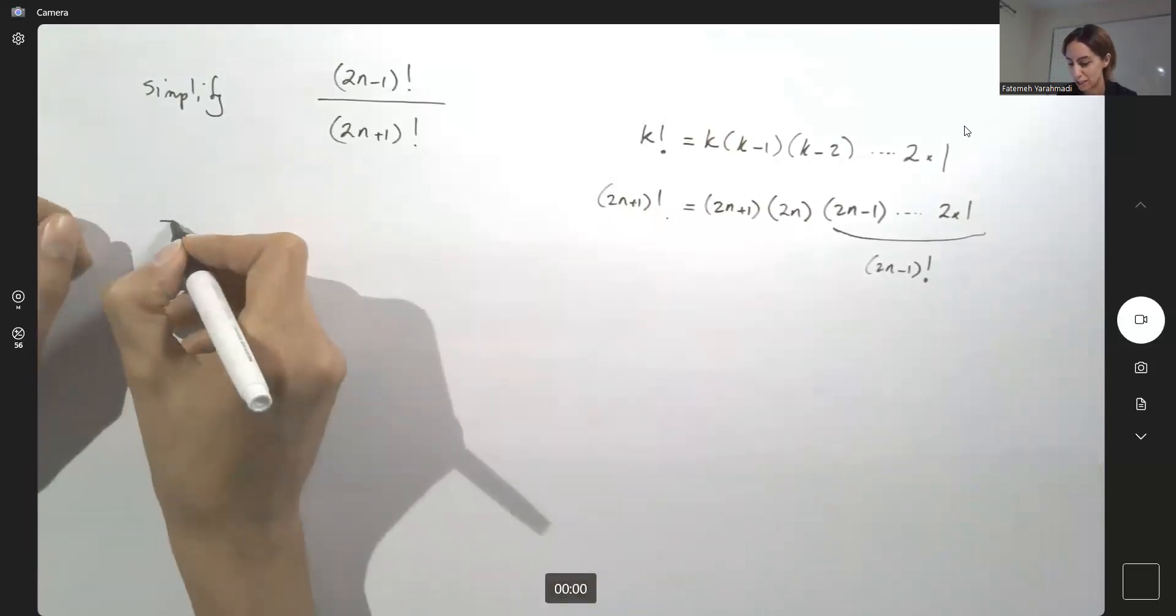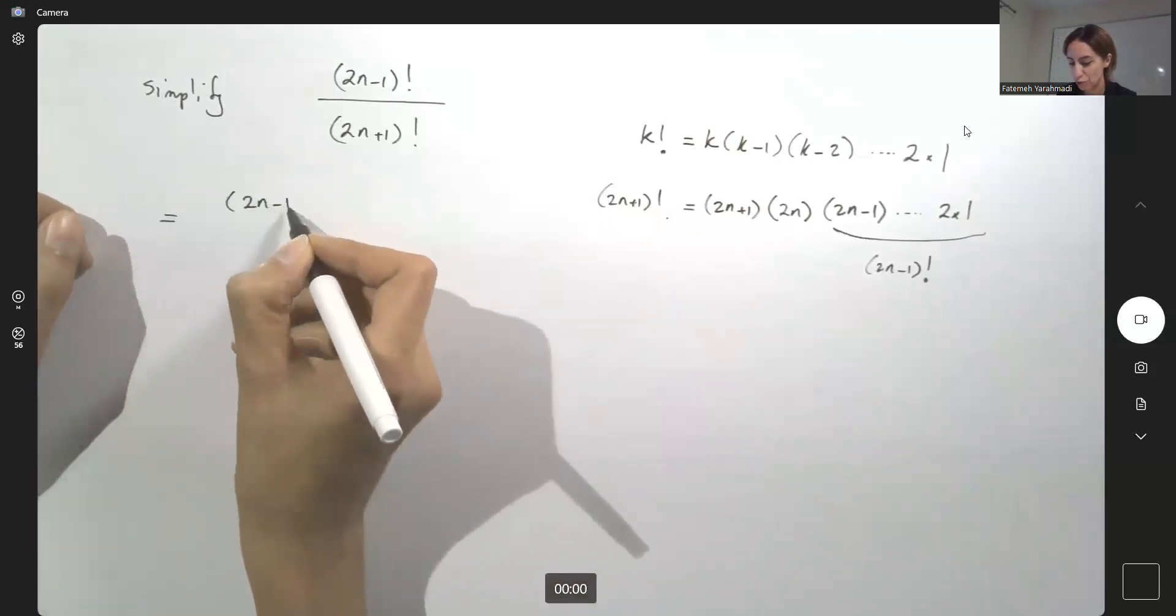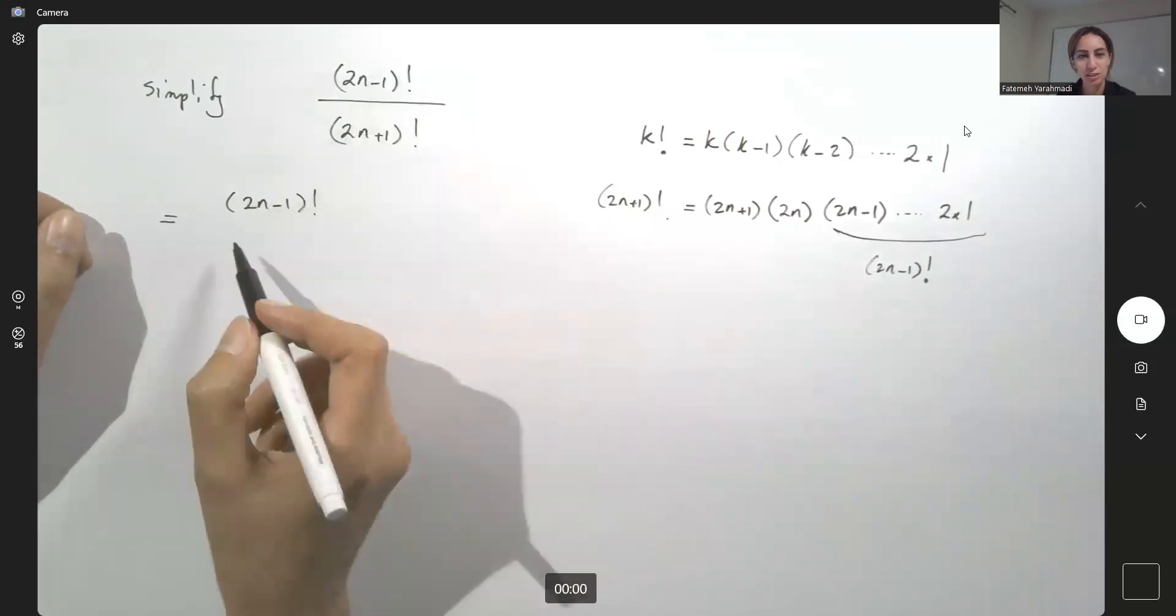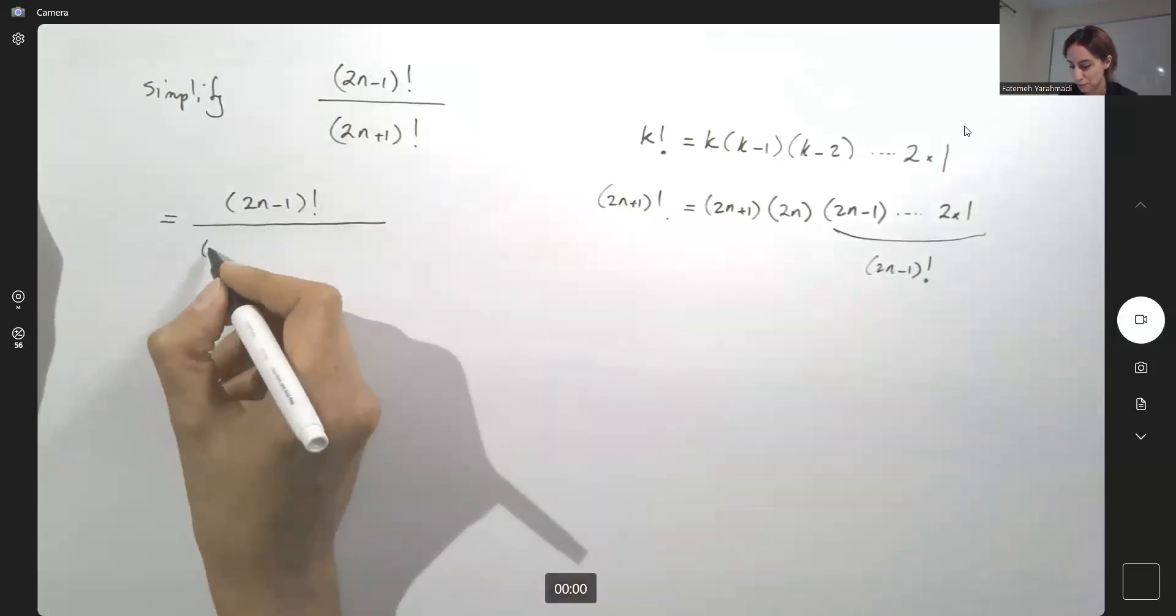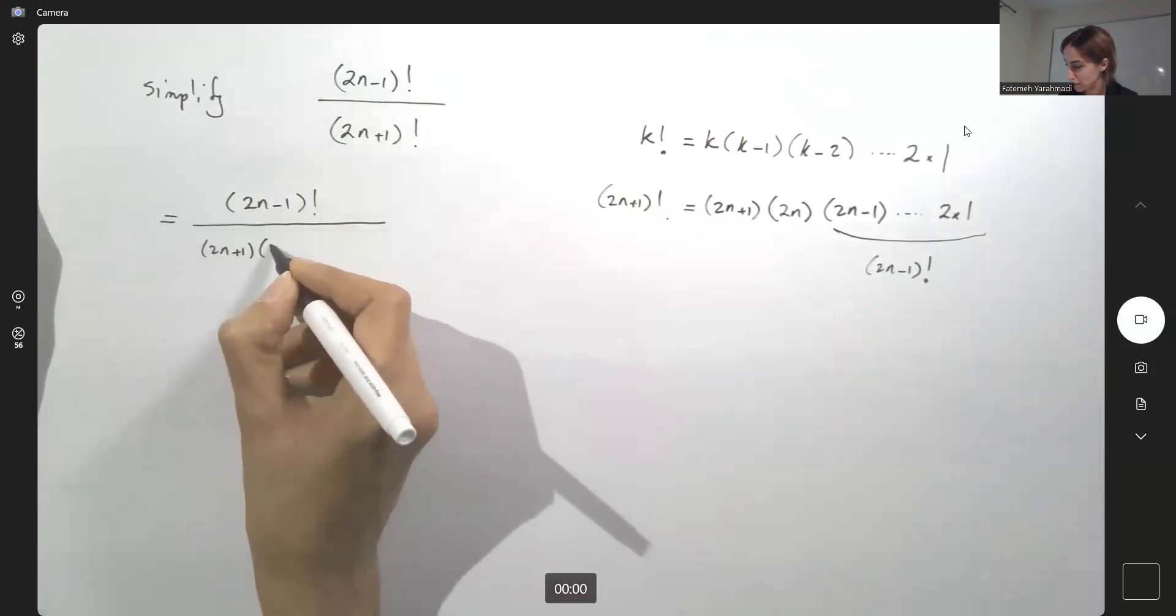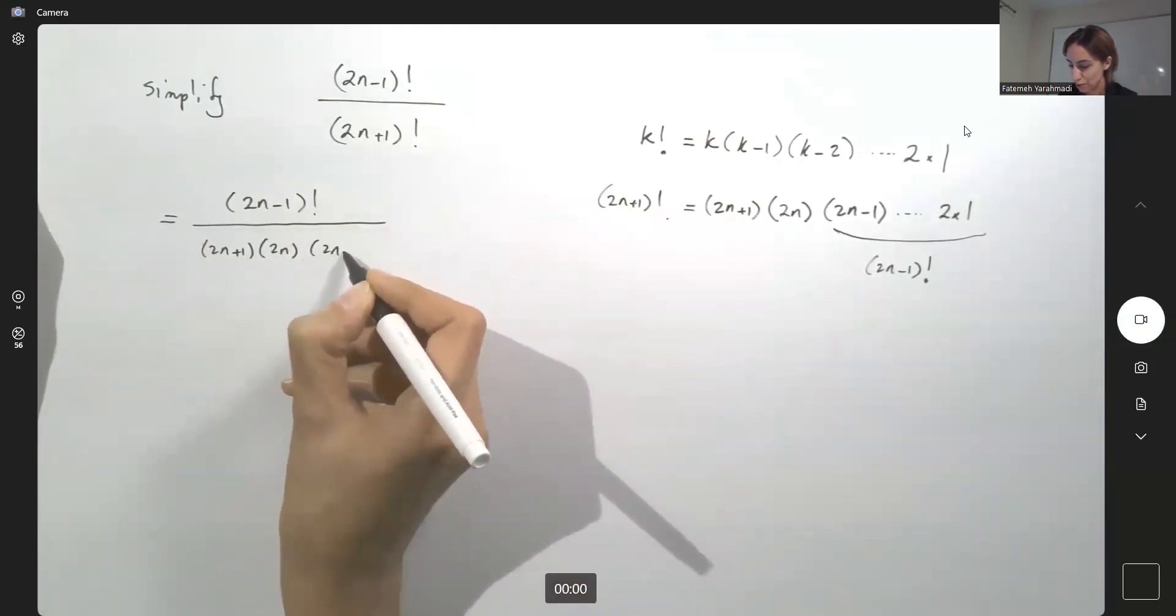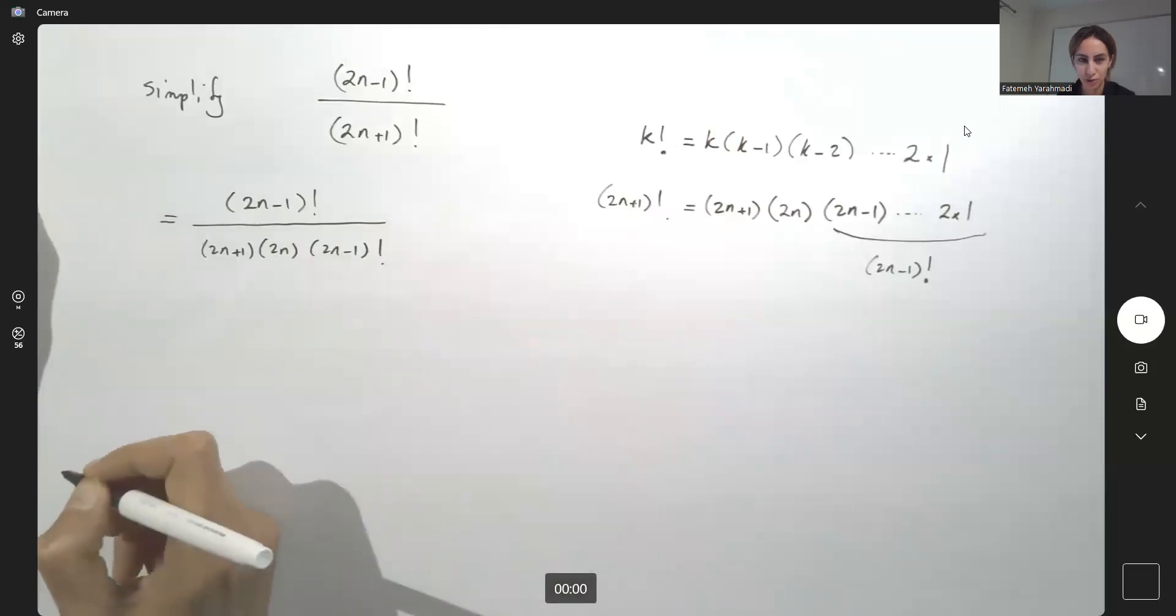So take a look. This can be written as, I'm not changing my numerator, my numerator stays the same, divided by the denominator, which can be written as 2n plus 1 times 2n times 2n minus 1 factorial. Well,